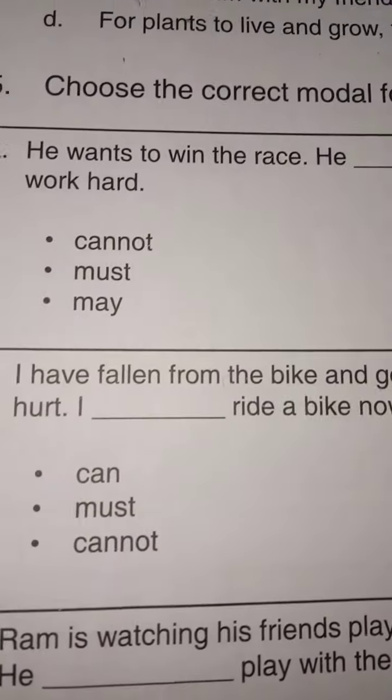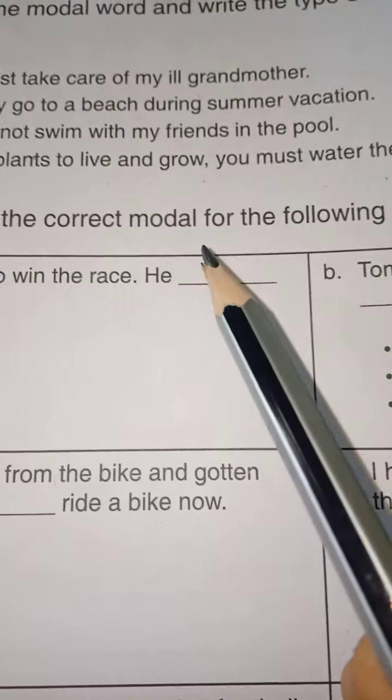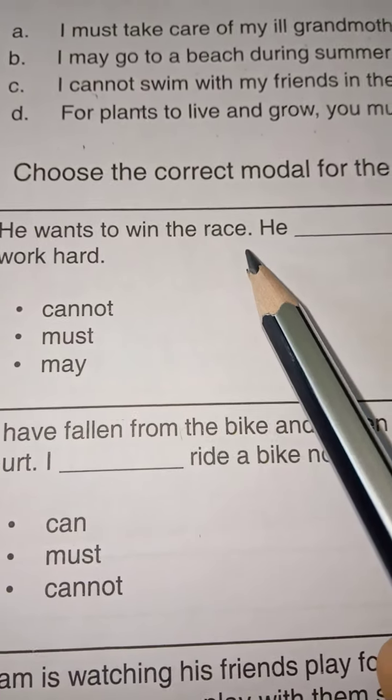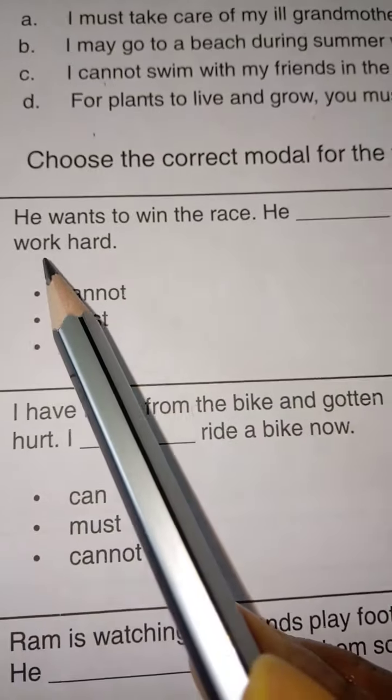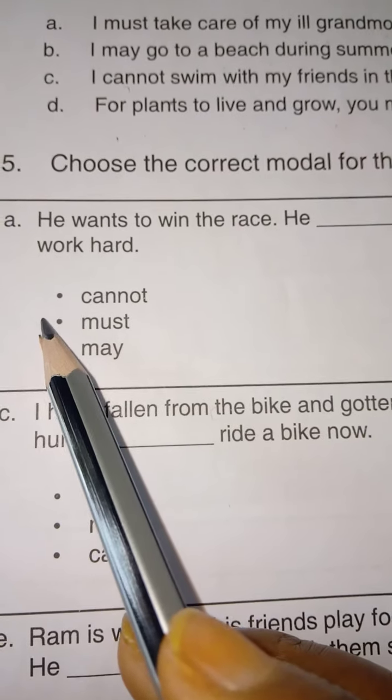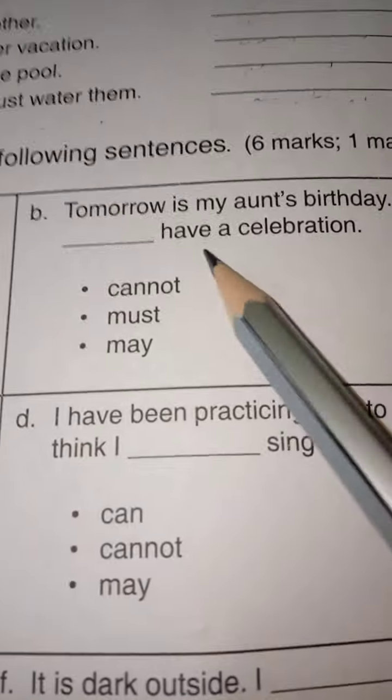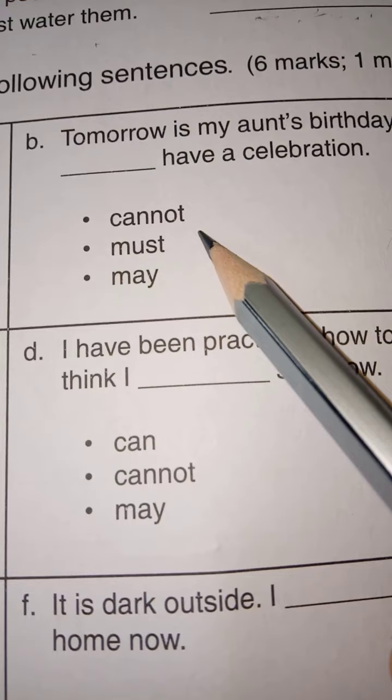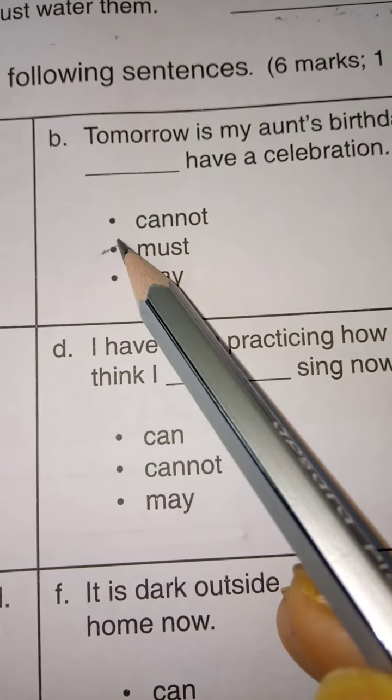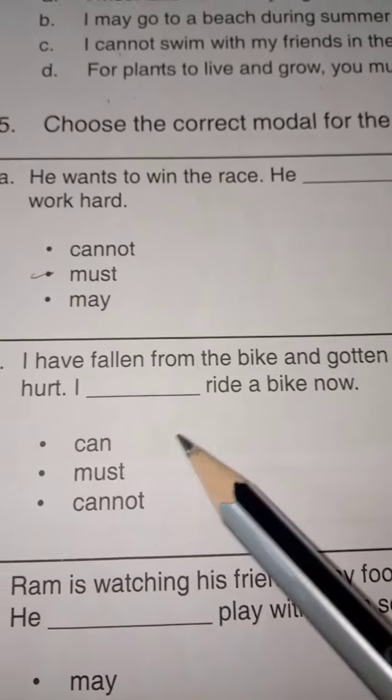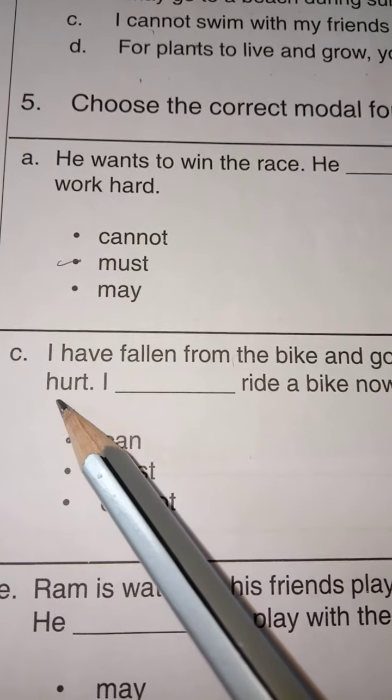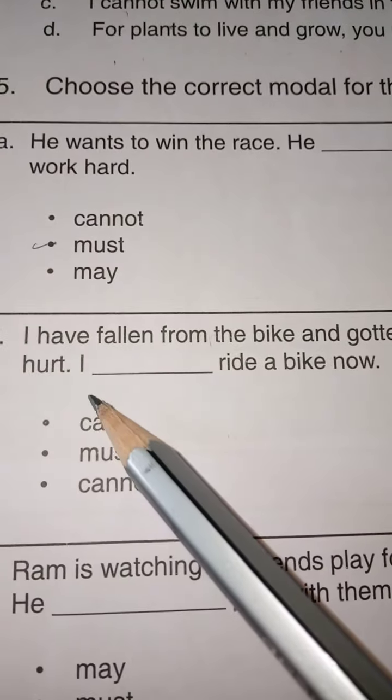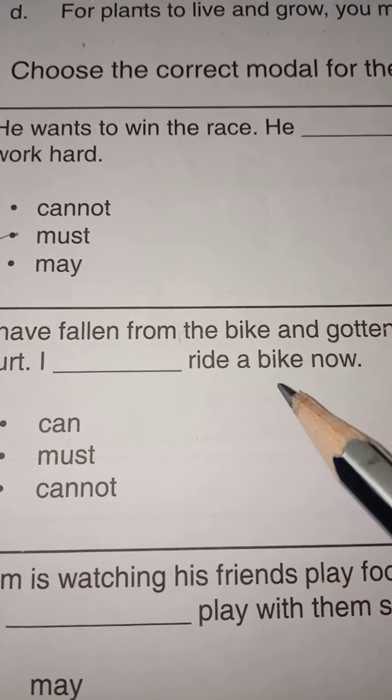Now, question number 5. Choose the correct modal for the following sentences. He wants to win the race. He dash work hard. He must work hard. He wants to win the race. So, he must work hard. Tomorrow is my aunt's birthday. He has a celebration. He must have a celebration.